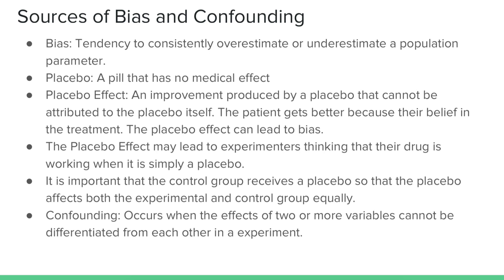In order to combat this, it is important to use a double-blind experiment where neither the administrators nor the subjects know which treatment they receive. For example, the control group should receive a sugar pill so that they don't know whether they are getting the experimental pill. This makes it so both groups are affected by the placebo effect equally, and accurate conclusions can still be made.